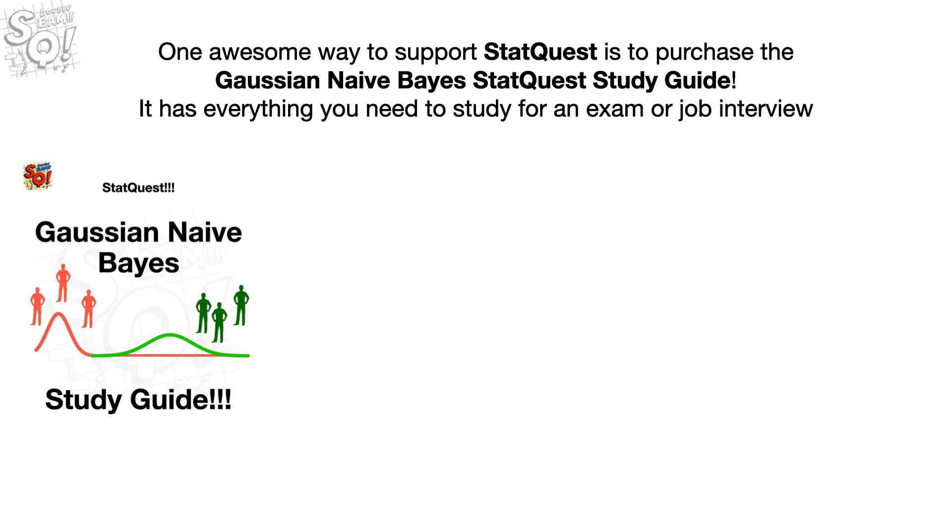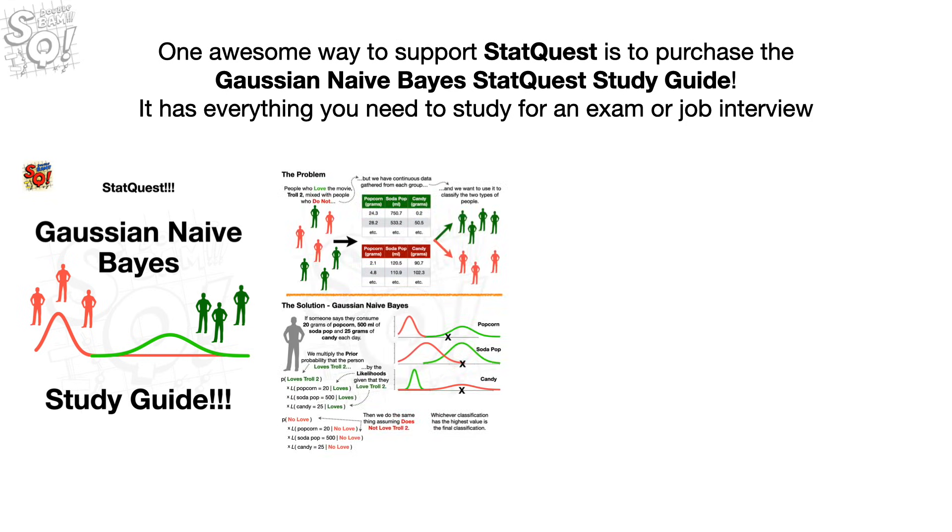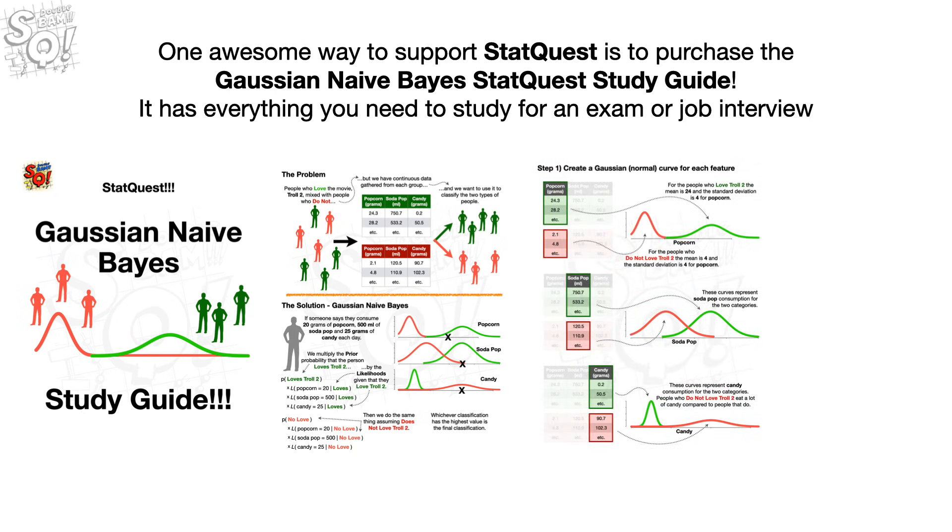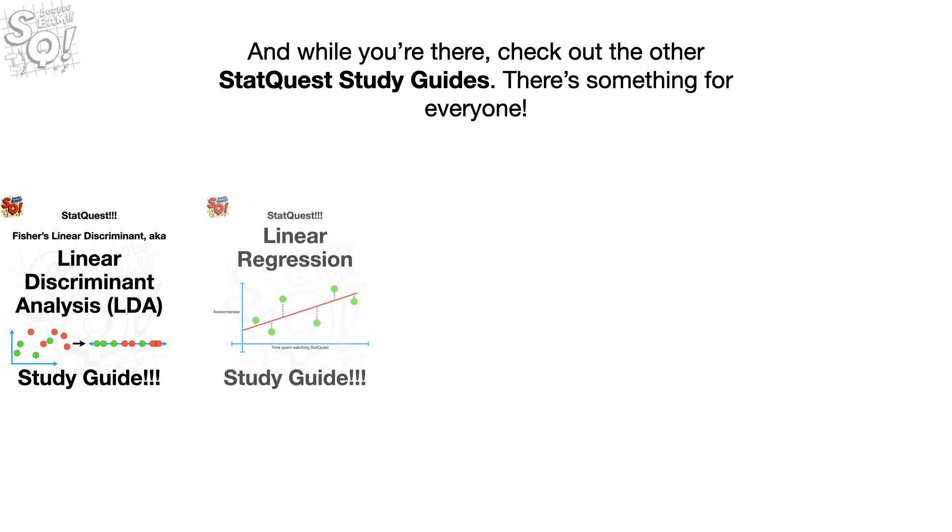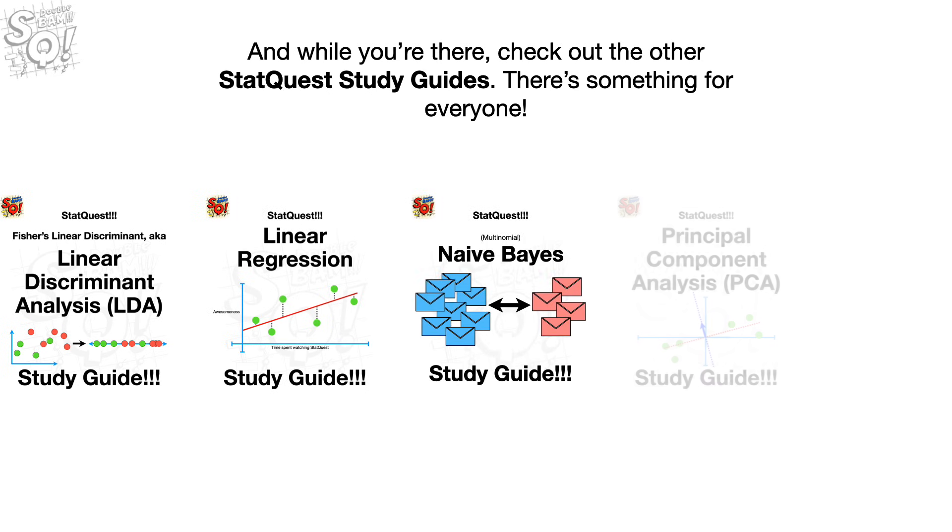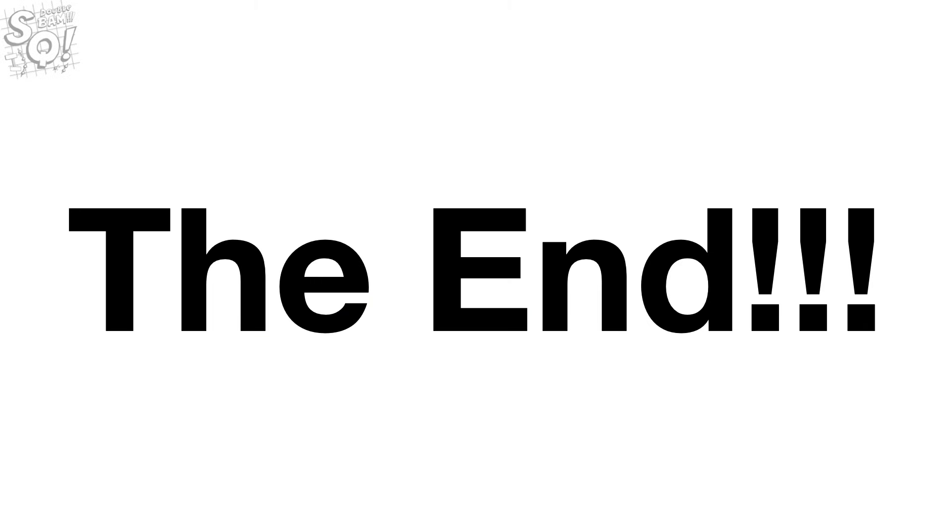Oh no! It's another shameless self-promotion. One awesome way to support StatQuest is to purchase the Gaussian Naive Bayes StatQuest Study Guide. It has everything you need to study for an exam or job interview. It's seven pages of total awesomeness. And while you're there, check out the other StatQuest Study Guides. There's something for everyone.